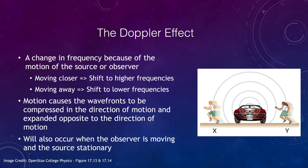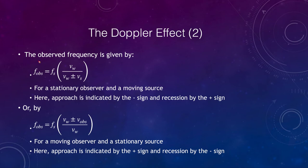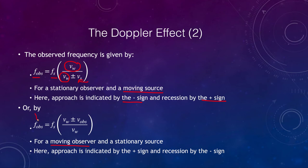Let's look at how we can calculate this. The equations for the Doppler effect give the observed frequency from the frequency of the source multiplied by a ratio. Here v_w is the speed of sound and v_s is the speed of the source. This version works when the source is moving, where approach is given by the negative sign and recession by the positive sign. When the observer is moving and the source is stationary, v_w is still the speed of sound and v_o is the speed of the observer, but in this case approach is indicated by the positive sign and recession by the negative sign.